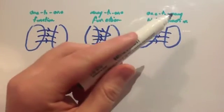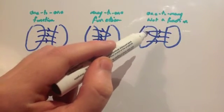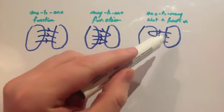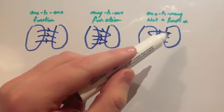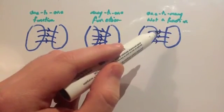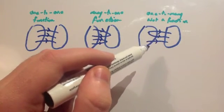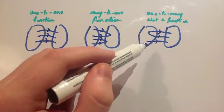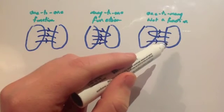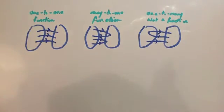A one-to-many is not a function. You couldn't have one element of the domain going to two different values of the range — that is not a function. Also, if you had an asymptote value, you need to be careful. You couldn't have a value of the domain not going across to a value of the range. You can make it a function by restricting the domain and stating that, but we'll look at that later.